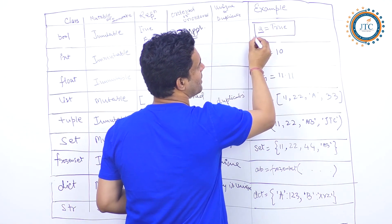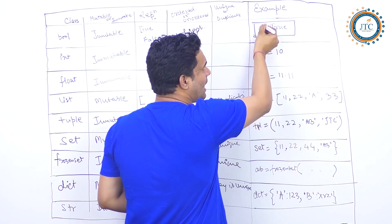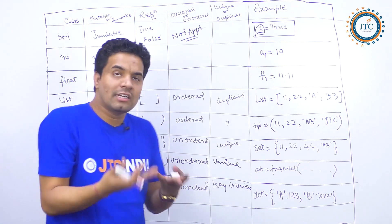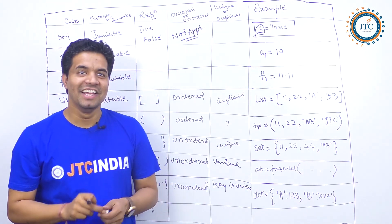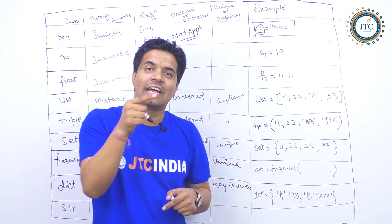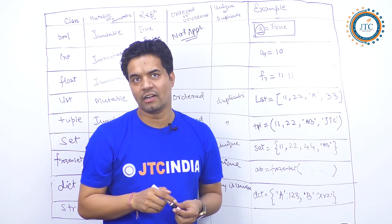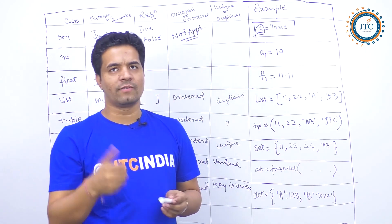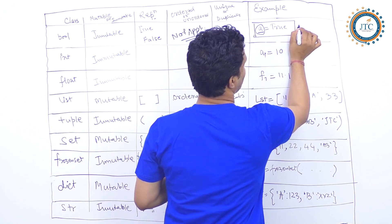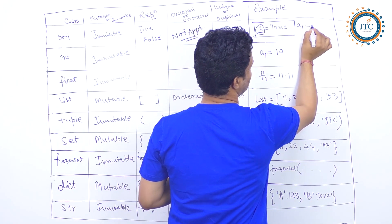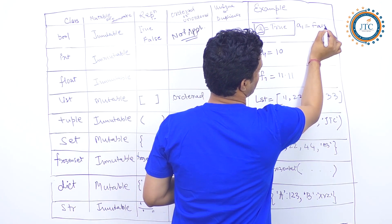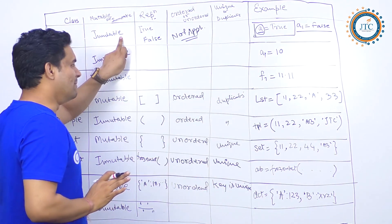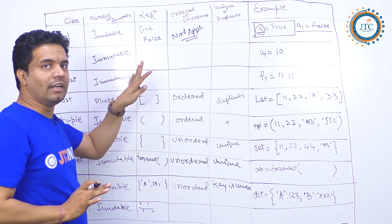If you declare a variable in Python — say `a = True` — then the type of `a` automatically becomes the bool type. That is the beauty of Python: you don't need to declare the type of variable, just assign the value and Python stores it accordingly. You can also write `a = False`.